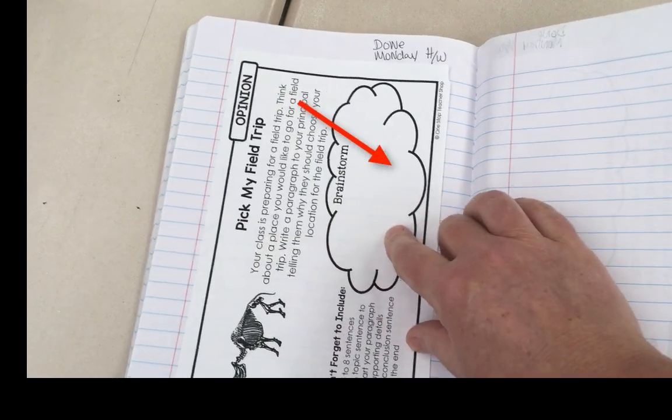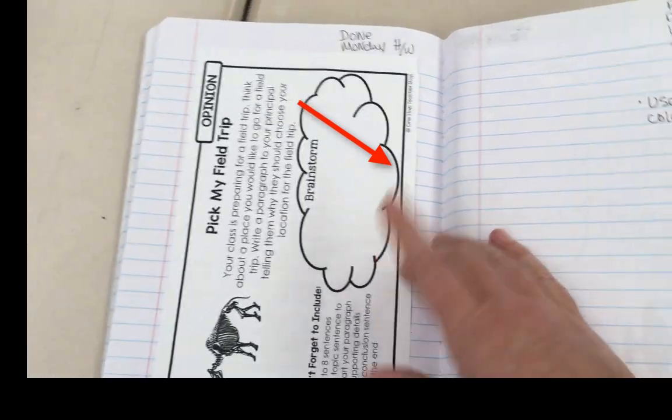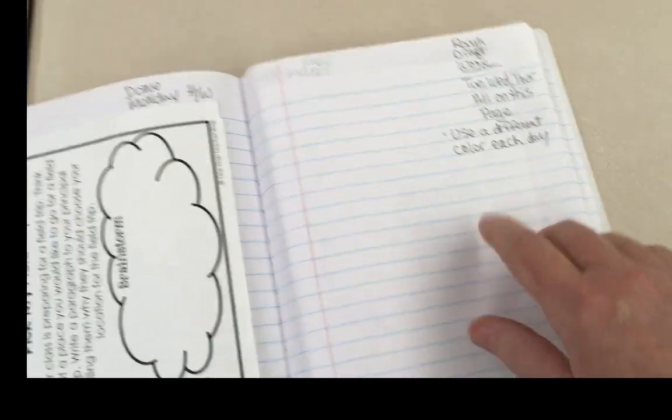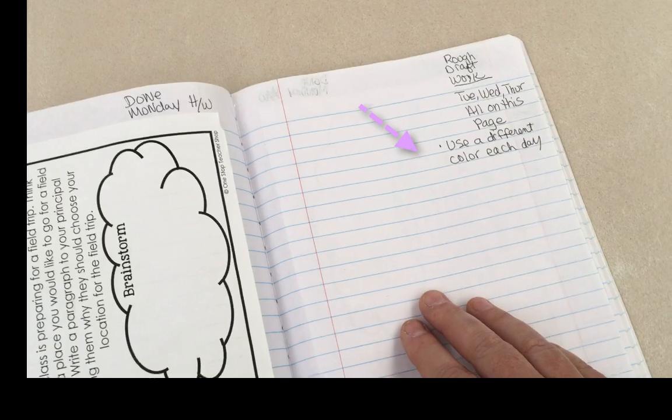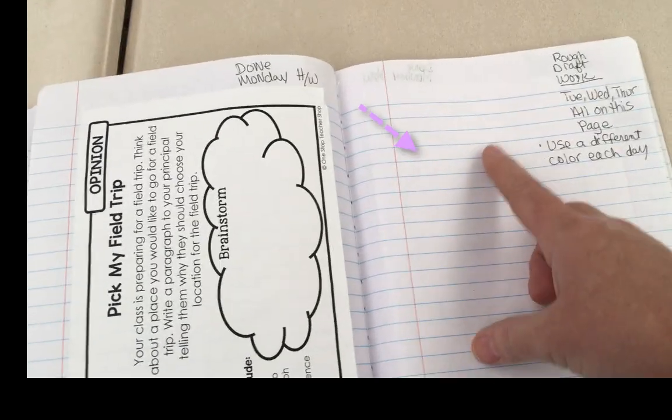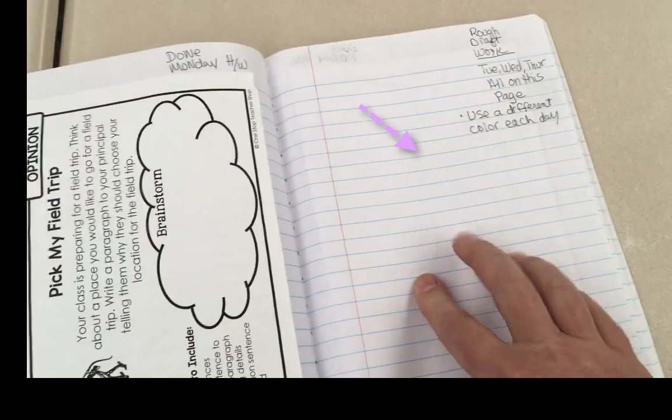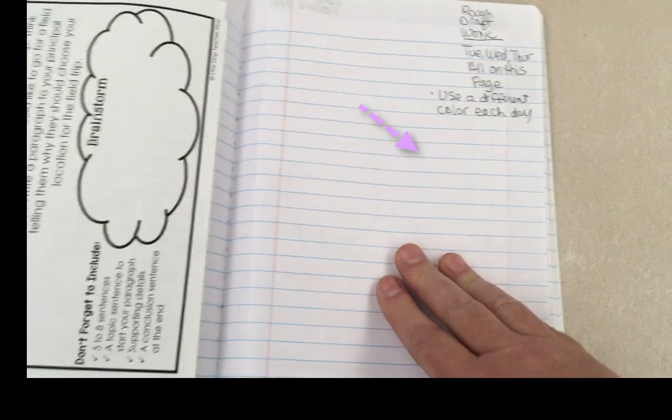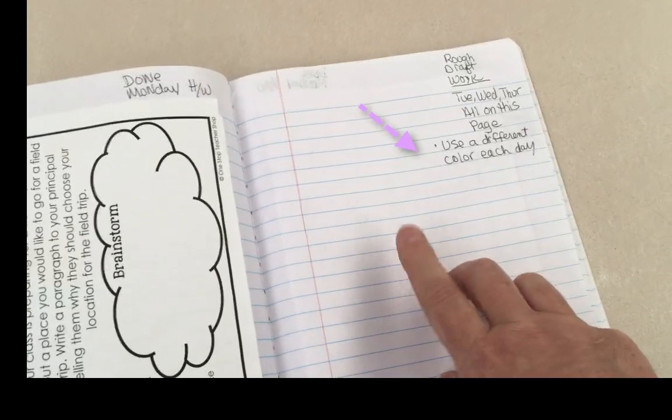According to the prompt, you brainstorm right here on Monday. It takes maybe five minutes. And then on Tuesday night, you're going to write your first rough draft in pencil right here on this page. All of your rough draft work happens on this page.